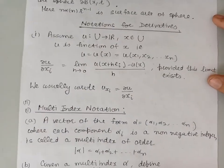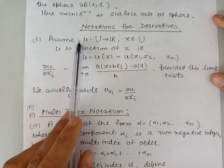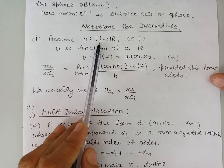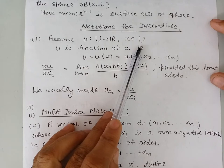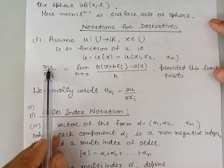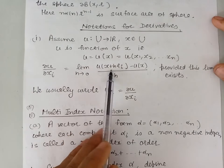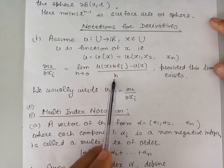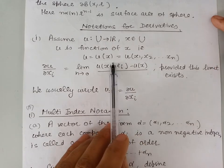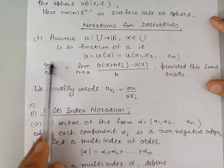Our next notation is the notation for derivatives. Let us define the partial derivative of a function u. This function u is defined on the set U, which is a subset of R^n. If we take a point x belonging to U, then the value of u at the point x is denoted by u(x). The partial derivative of u with respect to x_i is given by the limit as h approaches 0 of [u(x + h*e_i) minus u(x)] divided by h, where e_i is the standard coordinate vector in R^n. If this limit exists, it is called the partial derivative of u with respect to x_i, and is generally denoted by the symbol u_{x_i}.